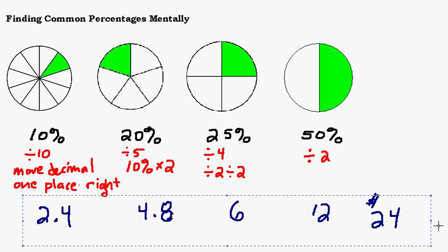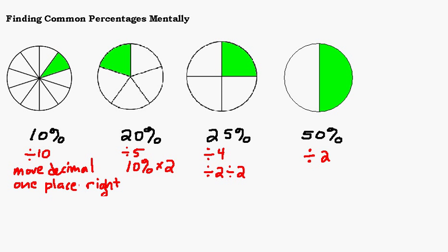Alright, good job. Let's try one more. Let's try a big number. How about 15,000? If you want to pause the video and try this, that'd be great. Alright, let's see what you got. So 10%, we're just going to move the decimal once. That would be 1,500. 20%, we want to double that. That'd be 3,000. 25%, we got to cut it in half and cut it in half again. Let's see.